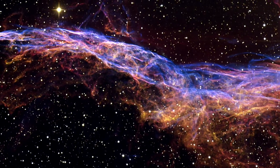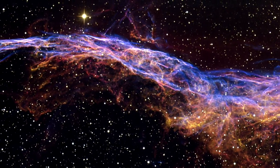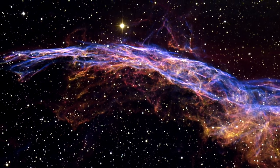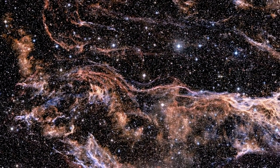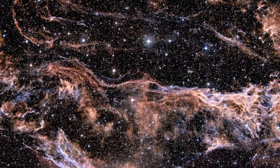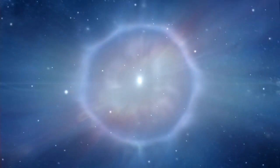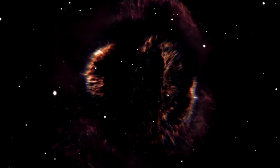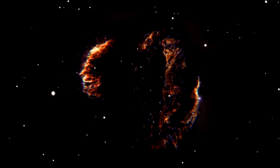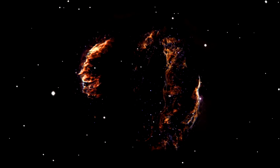The intertwined rope-like filaments of gas in the Veil Nebula result from the enormous energy released as the fast-moving debris from the supernova explosion ploughs into the surroundings and creates a shock front. This shock, driven by debris moving at 600,000 kilometers per hour, heats the gas to millions of degrees. It is the subsequent cooling of this material that produces the brilliantly colored glows.